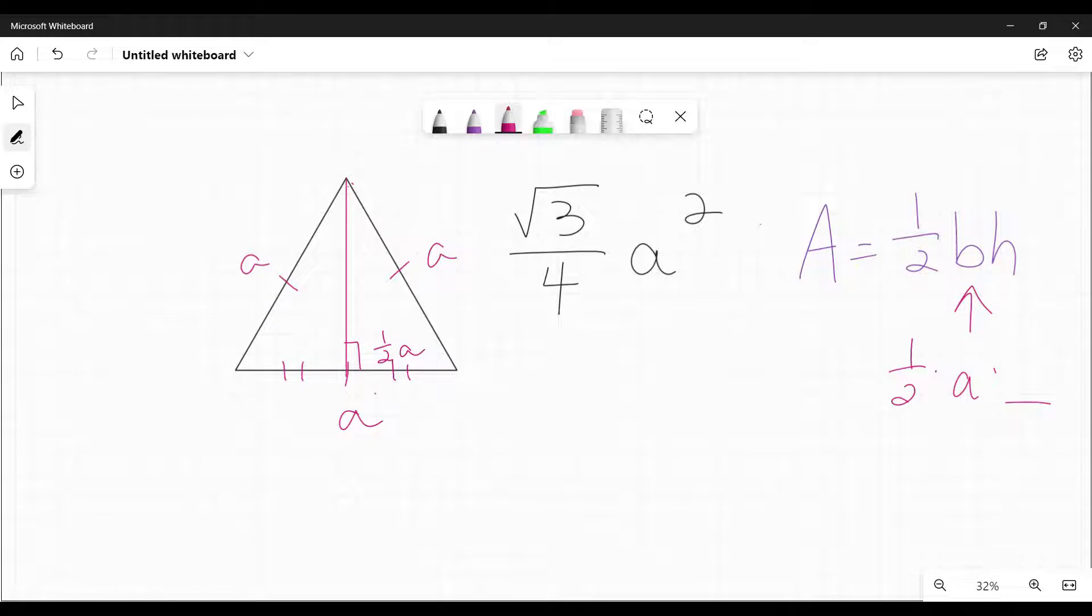Now, equilateral triangles, each angle is 60 degrees. So that means that this triangle that I've just created is a, I have a 90 and I have a 60. So that must be 30. It is a 30, 60, 90 triangle.